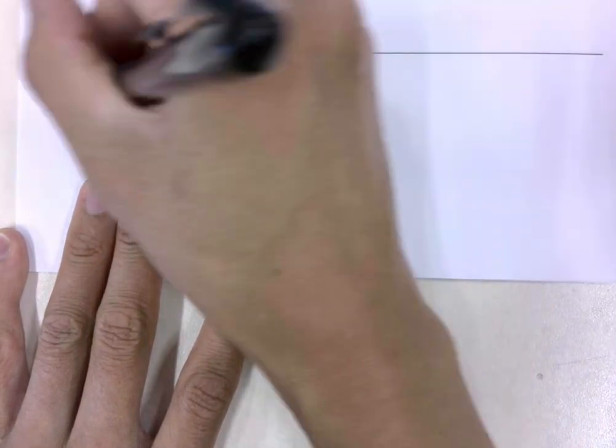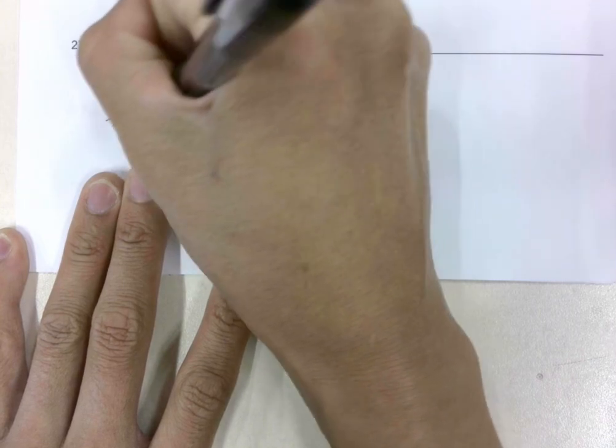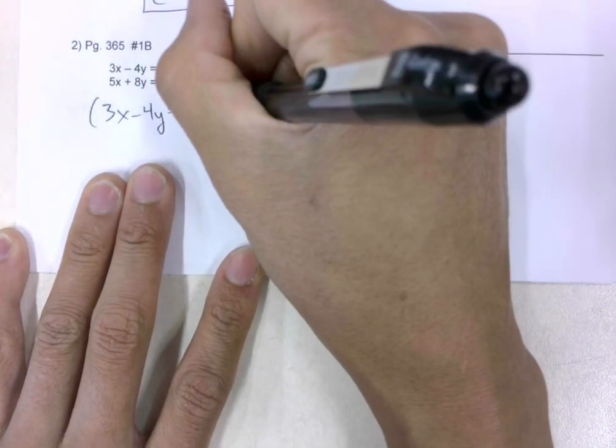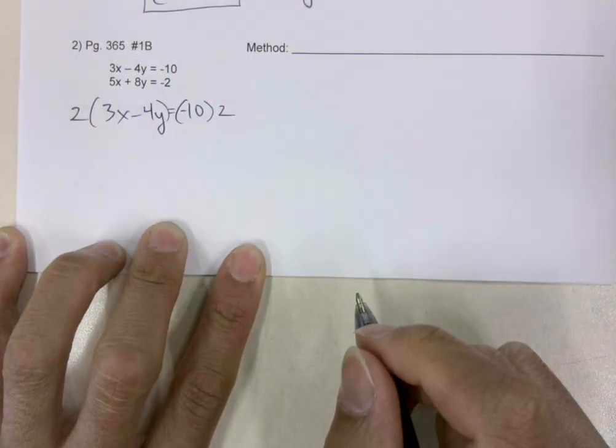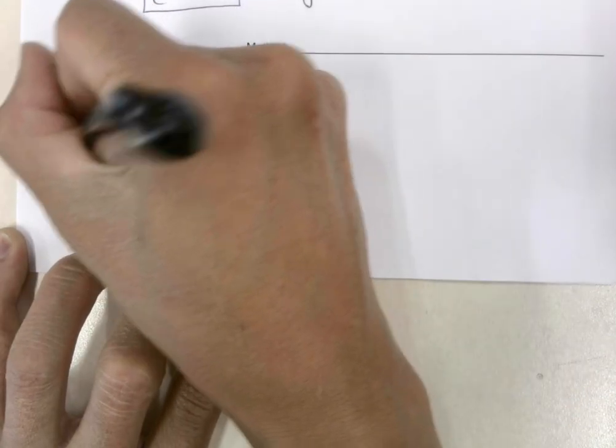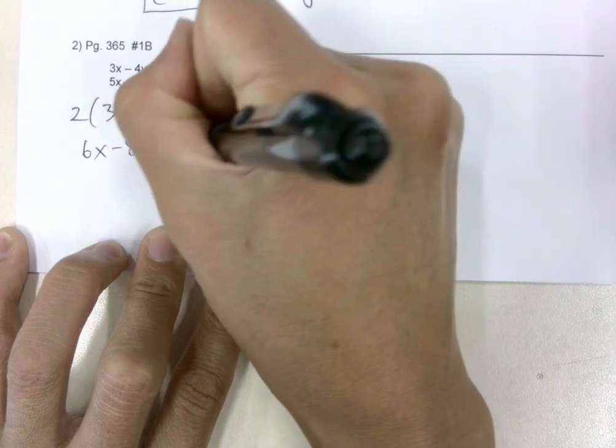Let's take that equation there: 3x minus 4y equals negative 10. Let's multiply the left side by 2, and the right side by 2 as well. So what we get is 6x minus 8y is equal to negative 20.